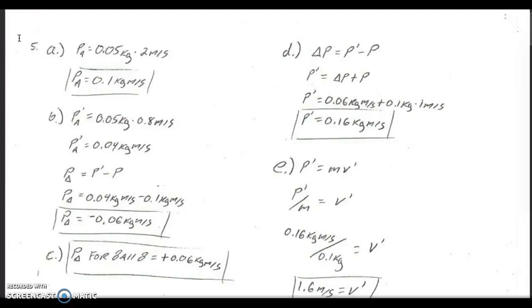Here are the answers to numbers 5 and 6 on the Momentum Review. In number 5, a glass ball, we're going to call that ball A, which has a mass of 0.05 kilograms and moves at a velocity of 2 meters per second. It collides with a second glass ball, ball B, which has a mass of 0.1 kilograms. They're moving along the same line, and ball B is moving with a velocity of 1 meter per second. After the collision, ball A is still moving but with a velocity of 0.8 meters per second. This is an elastic collision.